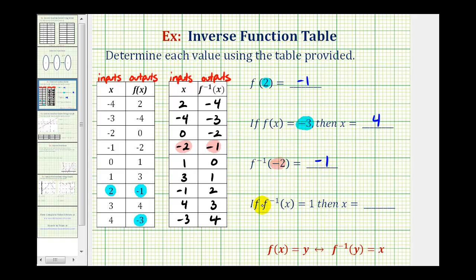And then for our last question, if f inverse of x equals one, determine the value of x. So here, positive one is the output of the inverse function and we're asked to find the input. So looking at the outputs or inverse function values, here's the inverse function value of positive one, which means the input, or x, has to equal three. And that's going to do it for this question. I hope you found this helpful.